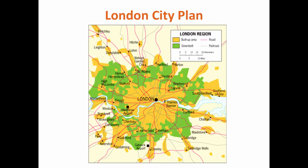Also, cars didn't exist when many of the European cities were being designed, so they were designed for foot traffic. There are lots of curvy, narrow streets that weren't designed for cars, and they seem to be a little less organized than cities that are more modern and have transportation methods in mind.